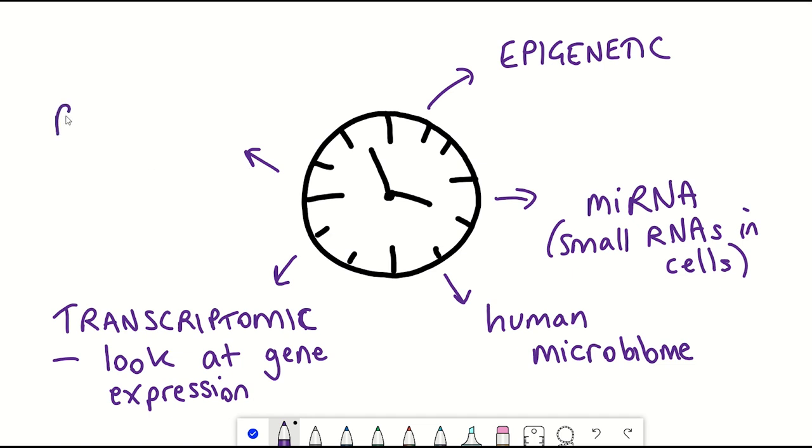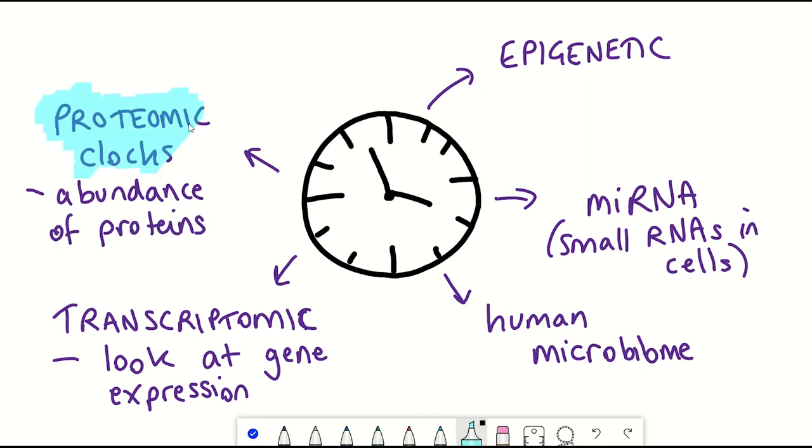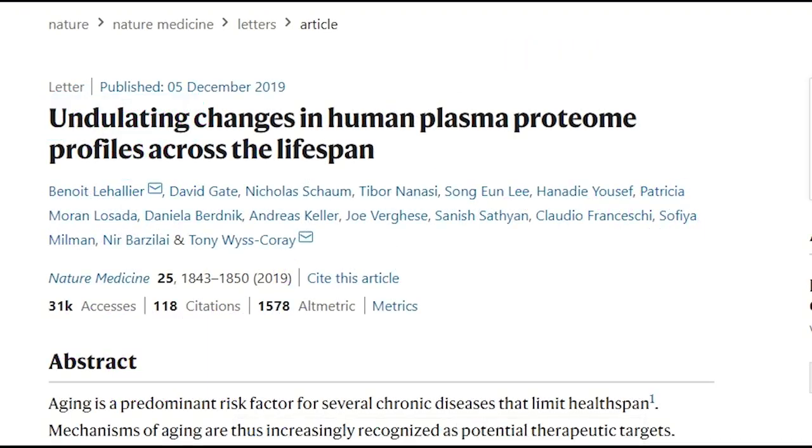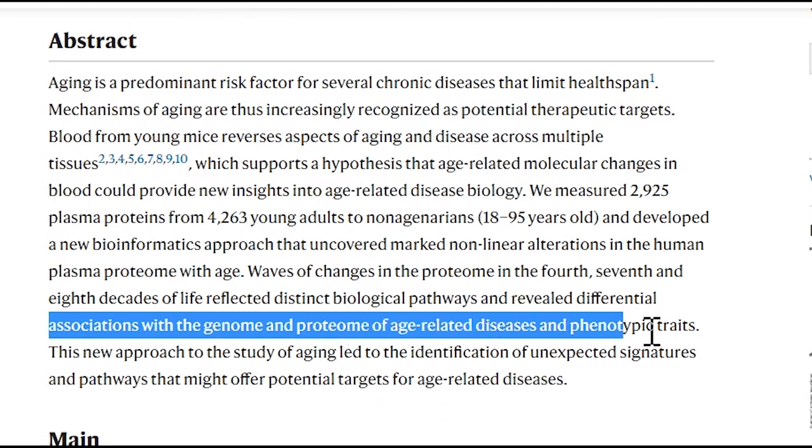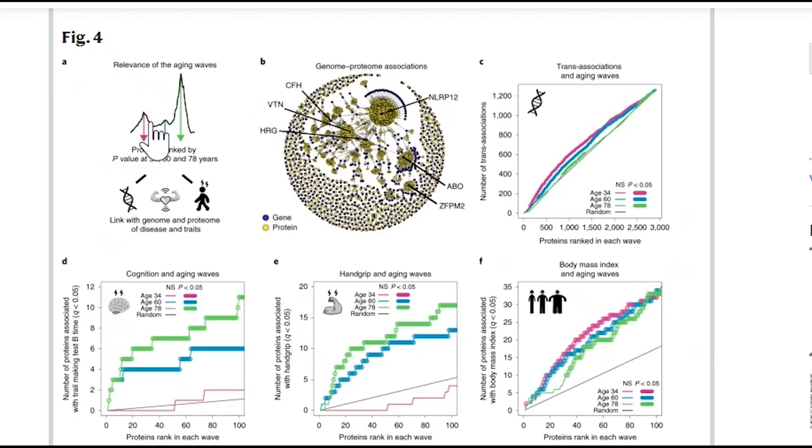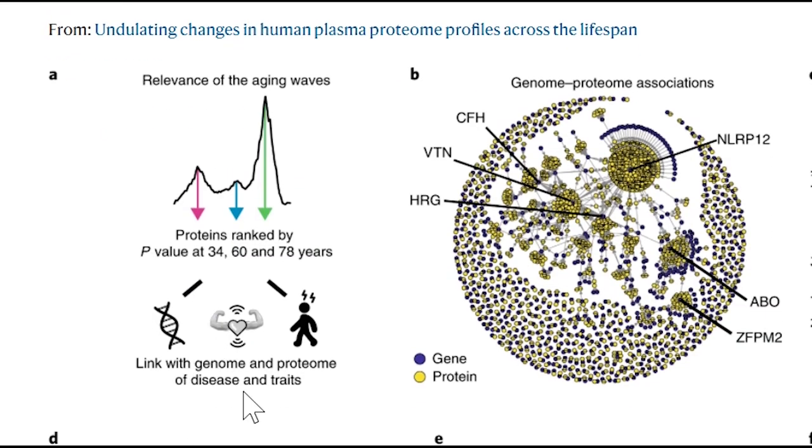But another area where there's now been a lot of recent advancements have been in protein detection, so looking at the abundance of different proteins and developing so-called proteomic aging clocks. For example, a 2019 study developed a proteomic aging clock that demonstrated that individuals that had a lower predicted age than their chronological age performed better at cognitive and physical tests.